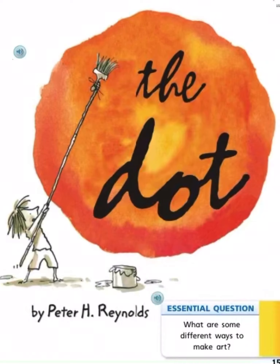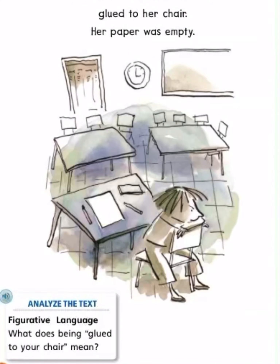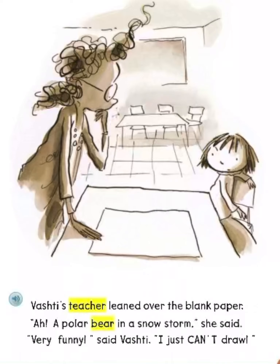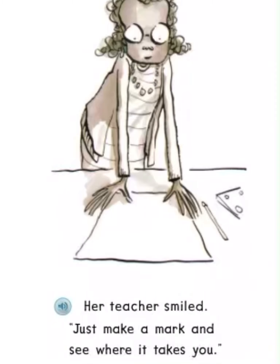The Dot. Essential question: What are some different ways to make art? Art class was over, but Vashet sat glued to her chair. Her paper was empty. Analyze the text — figurative language: what does being glued to your chair mean? Vashet's teacher leaned over the blank paper. 'A polar bear in a snowstorm,' she said. 'Very funny,' said Vashet. 'I just can't draw.' Her teacher smiled. 'Just make a mark and see where it takes you.'